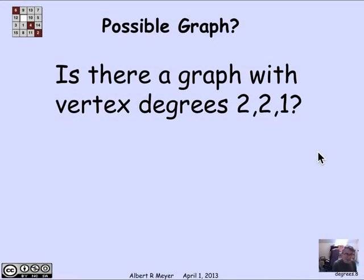So let's examine some properties of vertex degrees that are motivated by a simple example. Suppose I ask the question, is it possible to have a graph with vertex degrees of 2, 2, and 1? So implicitly, it's a three vertex graph. One vertex has degree 2, another has degree 2, and one has degree 1.